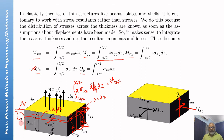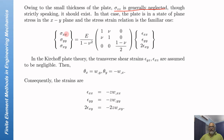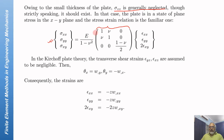Since we are dealing with very small thickness T, we neglect sigma ZZ completely. This results in a plane stress state where sigma XX, sigma YY, and sigma XY are the only nonzero stress components in a plate element. We can then write the constitutive equation where the stresses are related to the three strains using the plane stress constitutive equation derived previously.